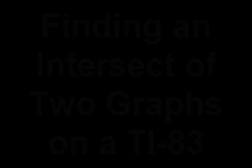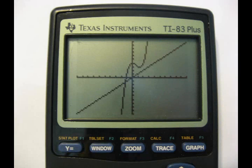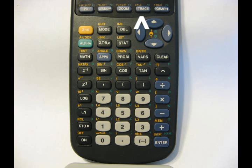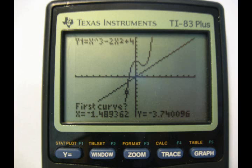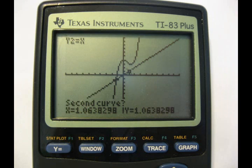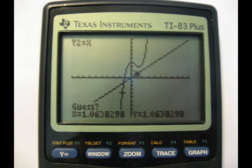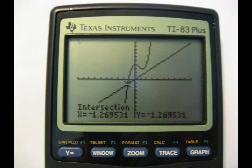To find an intersect of two graphs, you go second, trace, and then you press 5 to give you the intersect to find it. You put the first curve, you press enter, and then it will say second curve, press enter, and then guess, press enter, and it will tell you the intersect value.